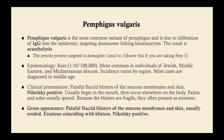The clinical presentation is painful, flaccid blisters of the mucous membranes and skin. Typically it starts in the mouth and then occurs elsewhere on the body, becoming widespread in later stages. The palms and soles are usually spared — that's an important distinction. Because the blisters are fragile, a lot of times when you see it, it's going to look like erosion rather than blisters, as the blisters will have already popped.